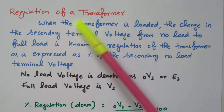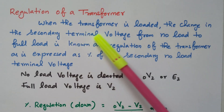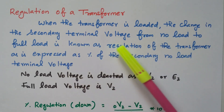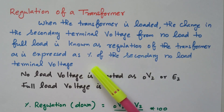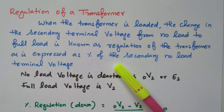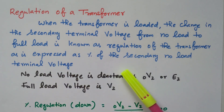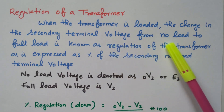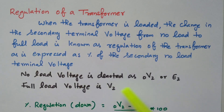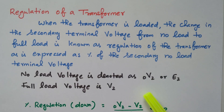Now we will go to the topic: regulation of a transformer. The regulation is nothing but when the transformer is loaded, the change in secondary terminal voltage from no load to full load is called the regulation of a transformer. It is expressed as a percentage of the secondary no-load terminal voltage. The secondary voltage is changing from no load to full load — how it is regulating from no-load to full-load value, that is called regulation.